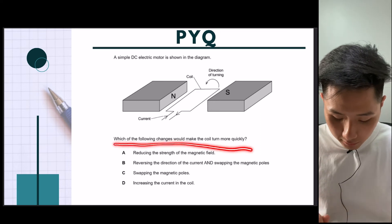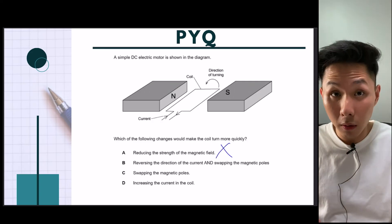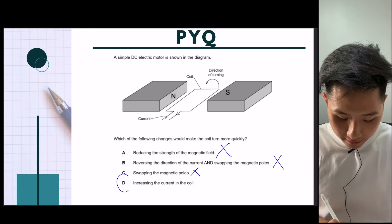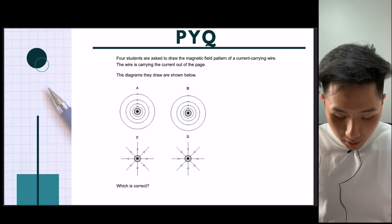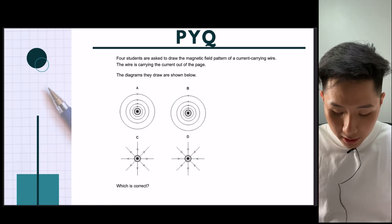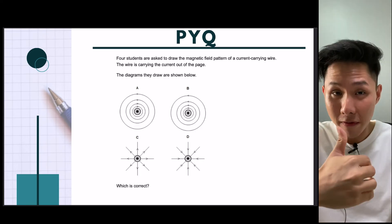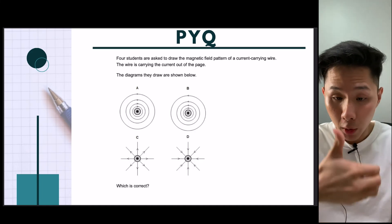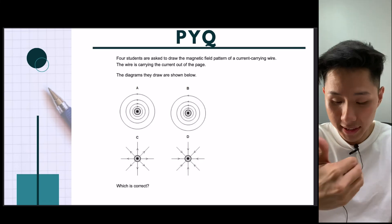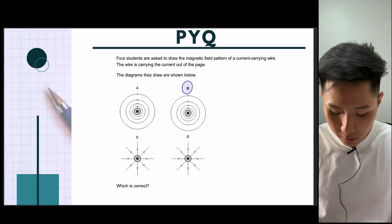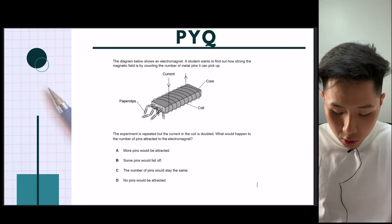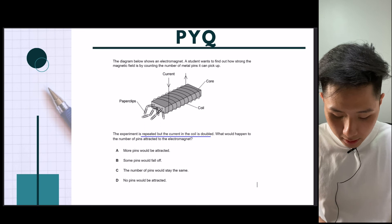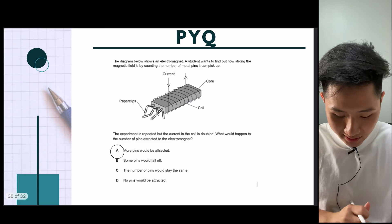Practice question: which of the following would make the coil turn more quickly? Reducing the strength of the magnetic field — not what we want. Reversing the direction or swapping the magnetic poles — that would just change the direction, not speed it up. The answer is D: increasing the current in the coil. Next question: for a wire carrying current out of the page, we identify the magnetic field using the right-hand grip rule. Make sure your thumb is pointing out of the page, and you will see the direction of the magnetic field is anticlockwise. The answer is B. Next: the diagram shows an electromagnet — what happens when the current is doubled? More pins will be attracted because the amount of current has increased. The answer is A.